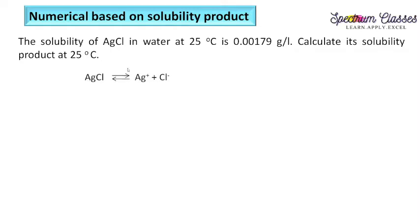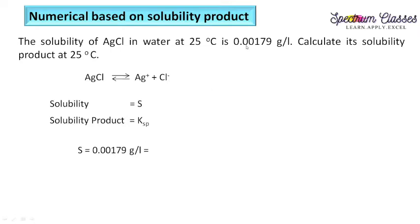First I will write the equation: AgCl gives Ag⁺ plus Cl⁻. Here you need to understand two things: solubility, represented by s, and solubility product. Solubility is given as 0.00179 grams per liter, but as defined earlier, it needs to be in moles per liter. The question is how we are going to convert grams into moles.